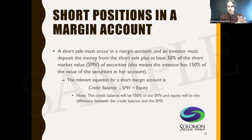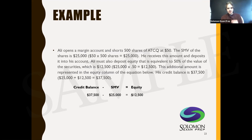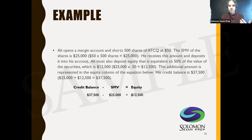For example, Ali opens a margin account and shorts 500 shares of ATCQ at $50. The SMV is $25,000 (500 × $50). He deposits that amount into his account, plus $12,500 of his own money (50% equity). So his credit balance is $37,500, his SMV is $25,000, and his equity is $12,500.